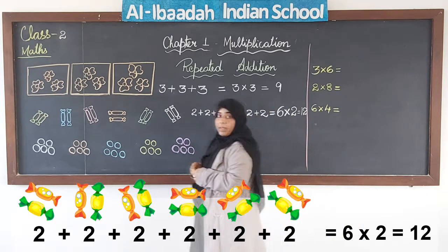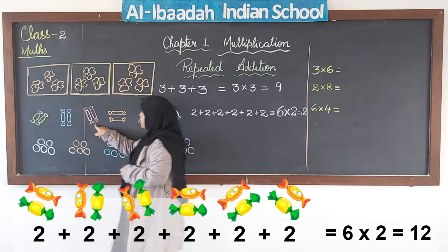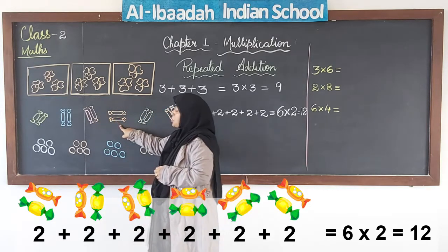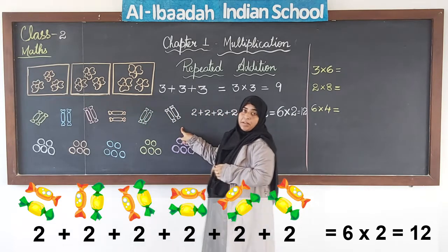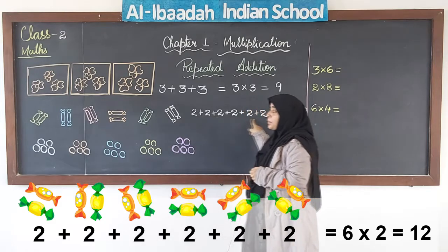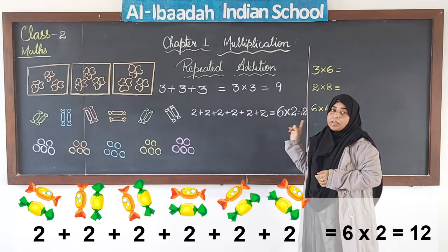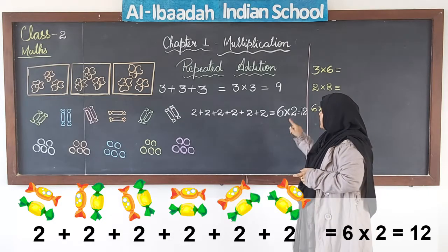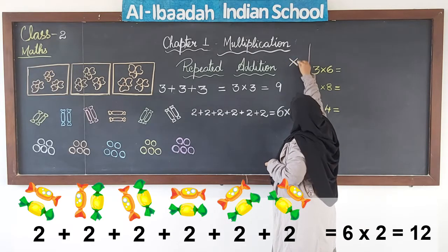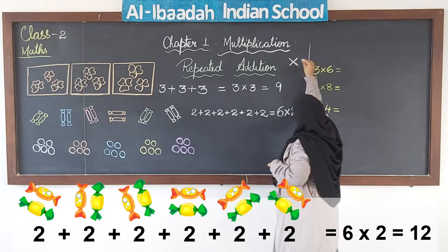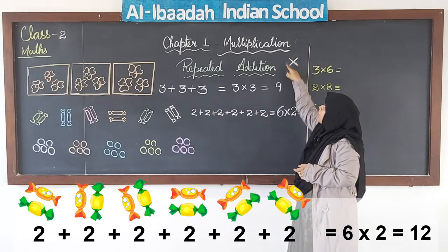Let us add and see whether we get 12. 2 plus 2 is 4, 4 plus 2 is 6, 6 plus 2 is 8, 8 plus 2 is 10, 10 plus 2 is 12. So when we add this number again and again or change it to multiplication form, the answer remains the same. This sign — we call it the 'into' sign — is the symbol we use for multiplication.